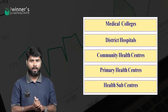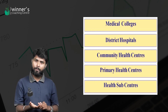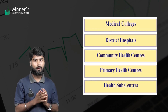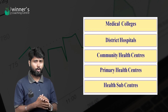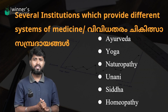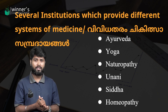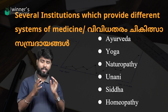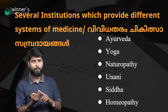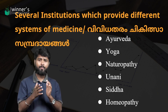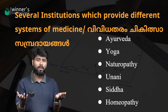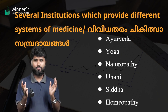Several institutions provide different systems of medicine — this includes allopathy. Other systems are under the Ministry of AYUSH: Ayurveda, Yoga, Naturopathy, Yunani, Siddha, and Homeopathy.